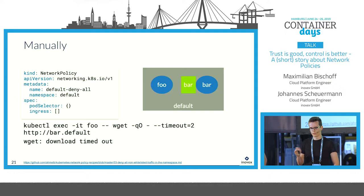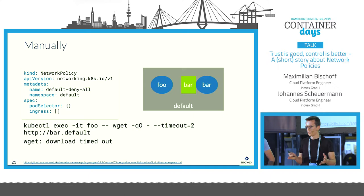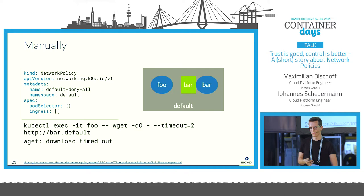There's also a fourth approach: just use kubectl exec into your existing pod and run wget. The obvious downside is you have to include a binary just for testing, increasing your attack surface. As an example, with a default deny policy we exec into the foo container, curl the bar container's service address, and verify the download times out as expected — confirming the policy worked as expected.